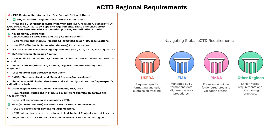Let's talk about regional requirements. You might think ECTD is a single format used worldwide, but each regulatory agency has its own requirements. USFDA wants specific submission tracking in module 1 and requires the electronic submission gateway. EMA focuses on SPOR data, mandatory ECTD for centralized approvals and uses the e-submission gateway. PMDA Japan has strict XML folder rules and custom validation criteria. Every agency follows the same core ECTD structure but tweaks the details.